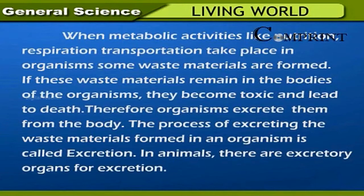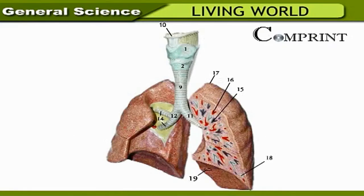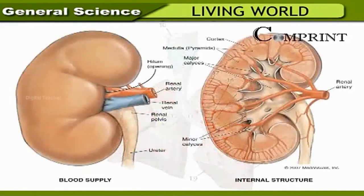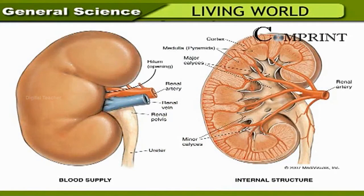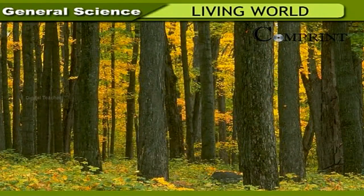If these waste materials remain in the bodies of organisms, they become toxic and lead to death. Therefore, organisms excrete them from the body. The process of excreting waste materials formed in an organism is called excretion. In animals, there are dedicated excretory organs for this purpose. In plants, there are no separate organs for excretion — plants actually utilize the waste materials for their own processes, which is a unique ability of plants.